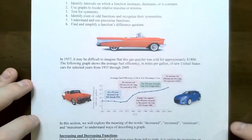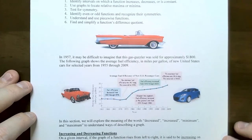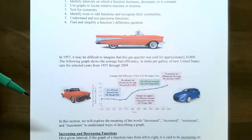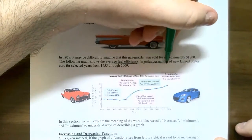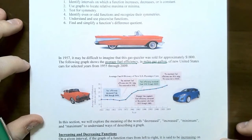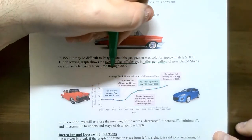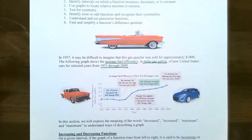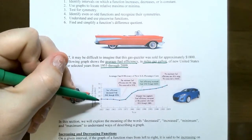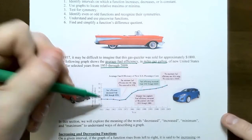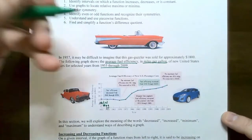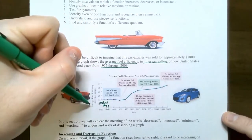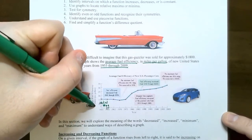Let's look at this car — a gas guzzler back in 1957, sold for about $1,800. We're going to look at a graph that gives the average fuel efficiency in miles per gallon of United States cars between 1955 and 2009. The graph starts in 1955, so this is the initial fuel efficiency — about 16 miles per gallon. So this point is 1955 and 16 miles per gallon.